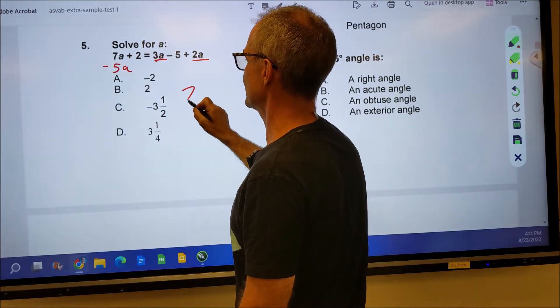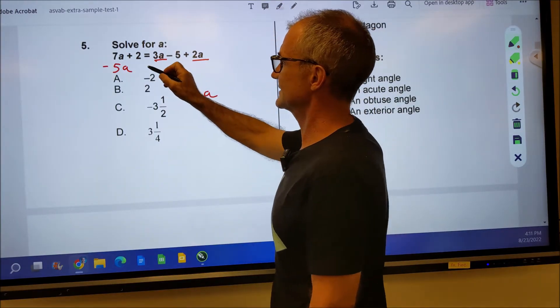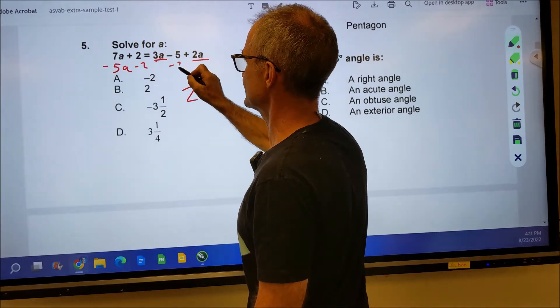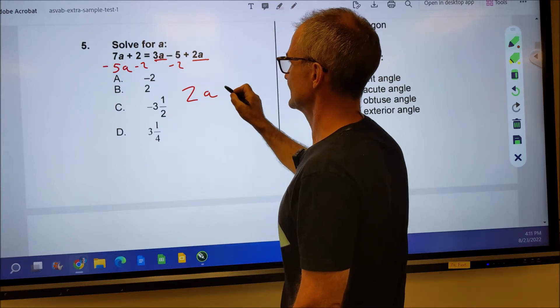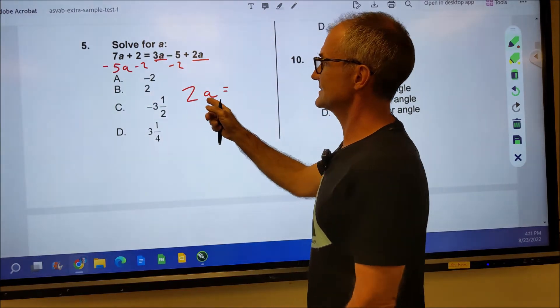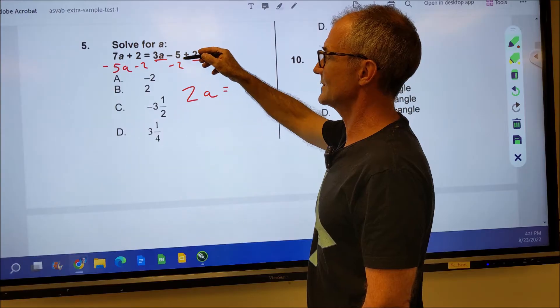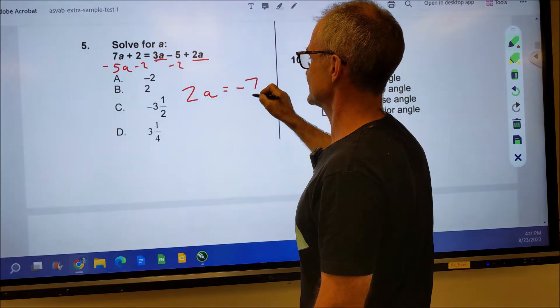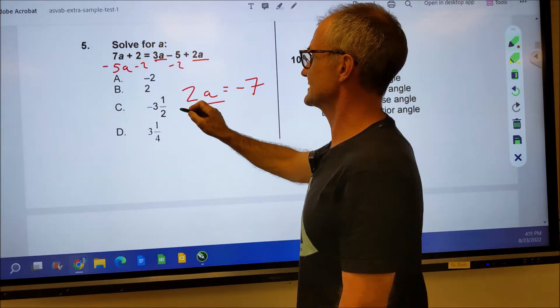So I'm going to subtract 5A from both sides. 7A minus 5A gives me 2A. Then I'm going to subtract two from both sides. Those will cancel. Only thing I have on the left is that 2A. Negative five minus two is negative seven. Divide both sides by two.